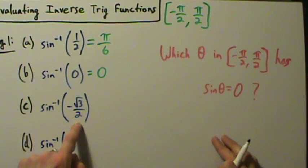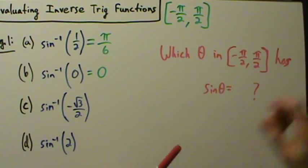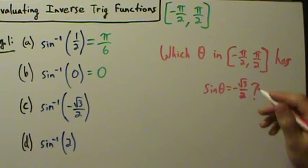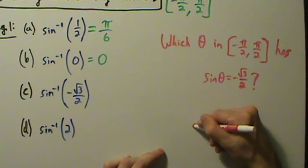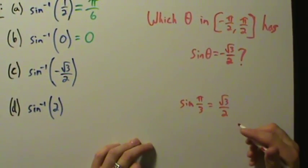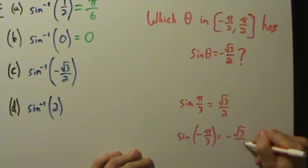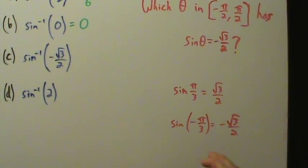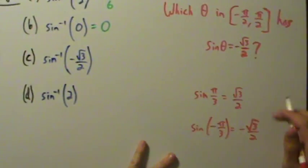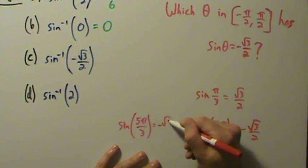For part C, inverse sine of negative root 3 over 2, we ask: which theta in this interval has sine of theta equal to negative root 3 over 2? From the unit circle, sine of pi over 3 is positive root 3 over 2, but we want a negative value. Looking at the unit circle, sine of negative pi over 3 is negative root 3 over 2. Also, if the unit circle is labeled from 0 to 2 pi, you might see that sine of 5 pi over 3 equals negative root 3 over 2, and that is true.